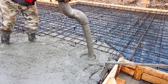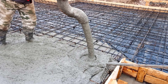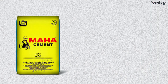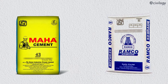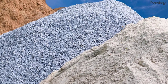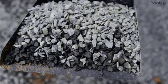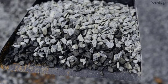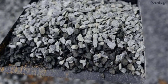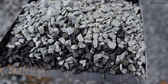Self compacting concrete is also known as self consolidating concrete. The materials used include cement — ordinary cement of either 43 or 53 grade can be used — and aggregates. The size of aggregates used for SCC design is limited to 20 mm. If the reinforcement employed for the structure is congested, the aggregate size can be in the range of 10 to 12 mm.